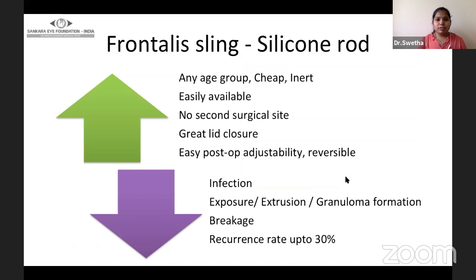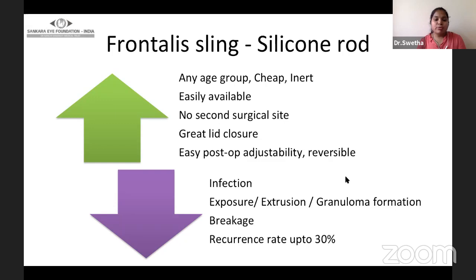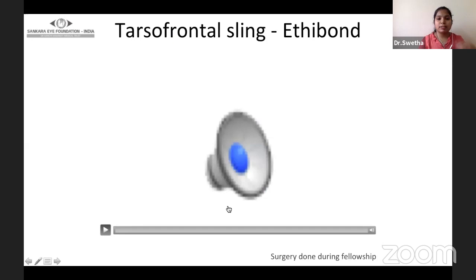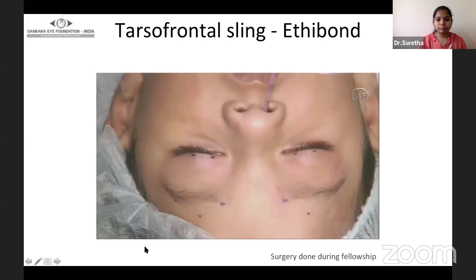Regarding the advantages of silicone rod: it can be done at any age group, is cheap, inert, and easily available. No second surgical site is required. There is good lid closure and easy post-operative adjustability. It is frequently reversible, which is important in cases of third nerve palsy, myasthenia, and CPEO. On the downside, there can be infection, exposure, extrusion, granuloma formation, breakage, and recurrence up to 30%. I am showing the surgery with ethibond suture in a child during my fellowship.